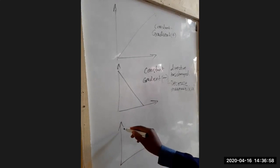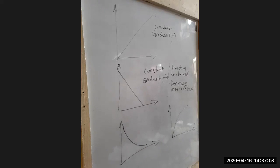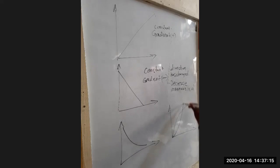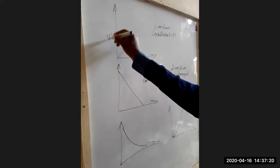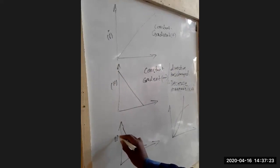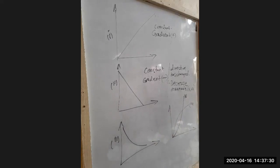We have a graph moving in this direction, a graph moving in that direction, and we can also have a graph that moves in that particular direction. So we have graph one, graph two, graph three, graph four, and graph five. These are the common types of graphs we are going to meet under motion.